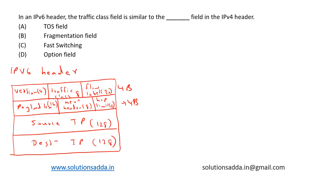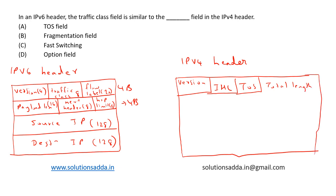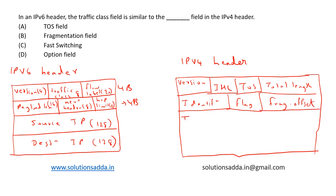Now let's consider the IPv4 header. The first row has version, then internet header length (IHL), then TOS (type of service), then total length. In the second row we have identification, flags, and fragmentation offset. In the third row we have TTL (time to live), then protocol, and header checksum.